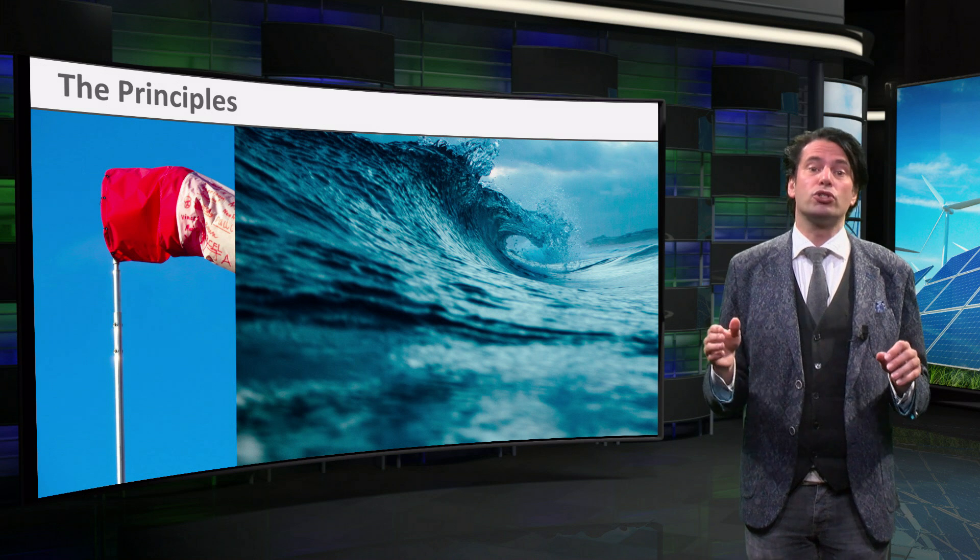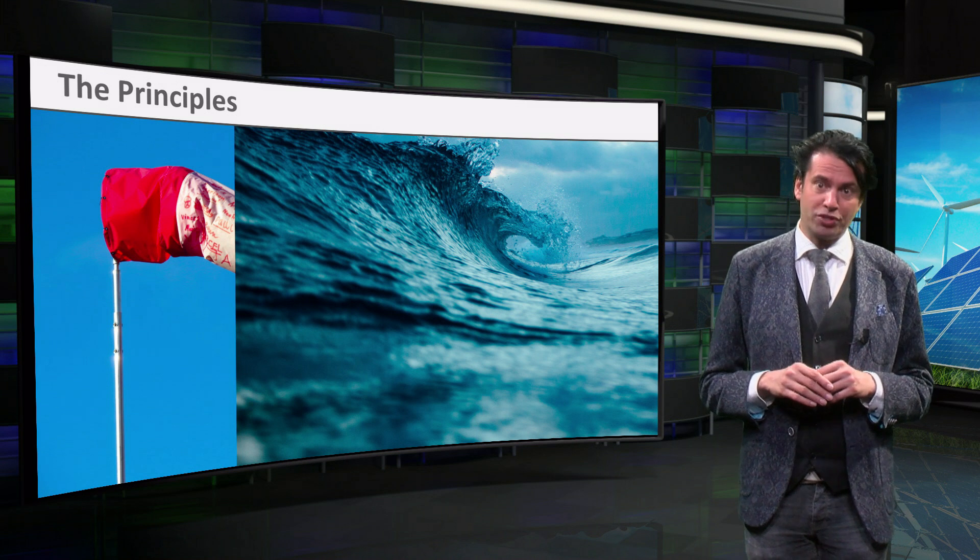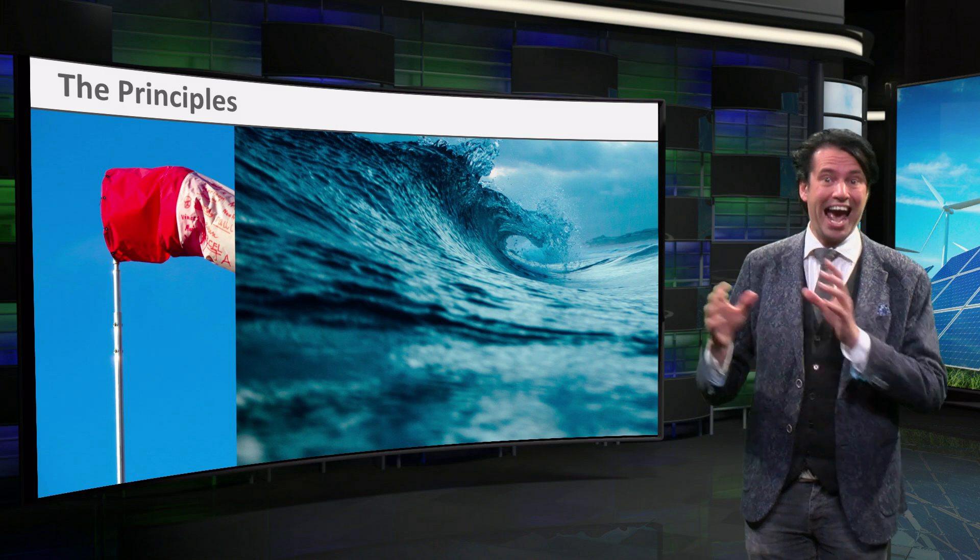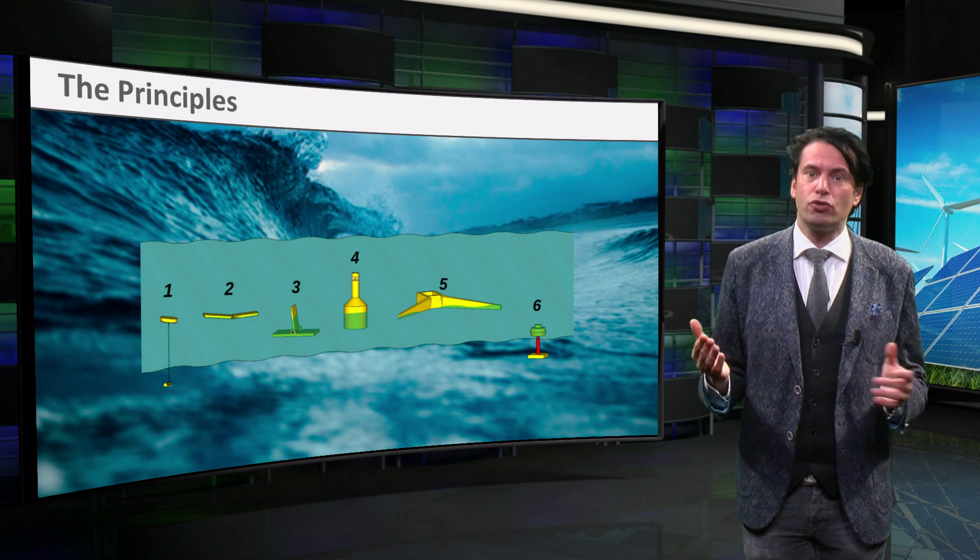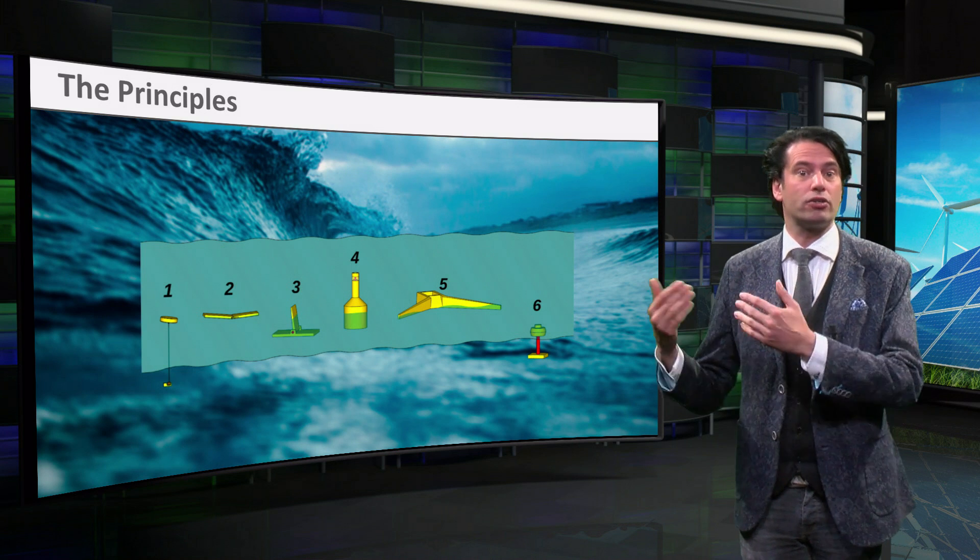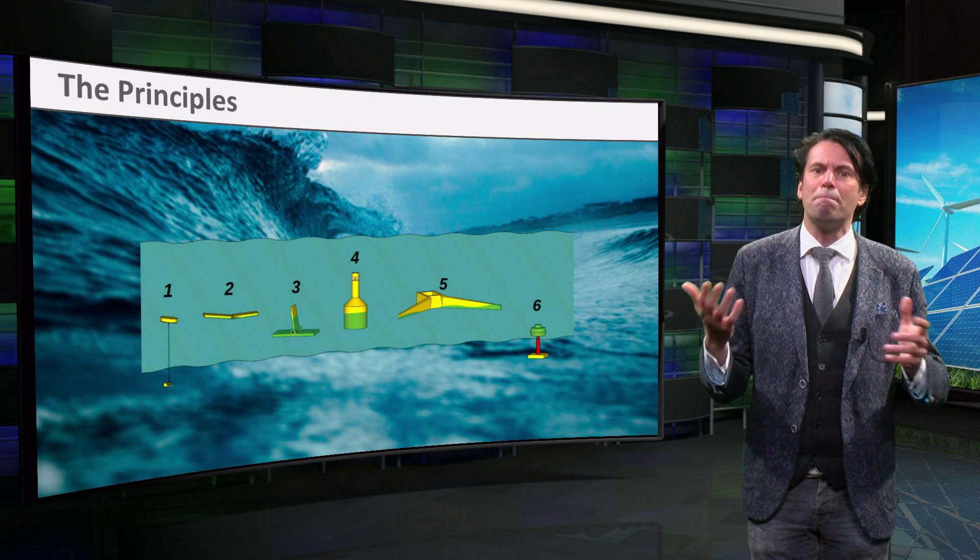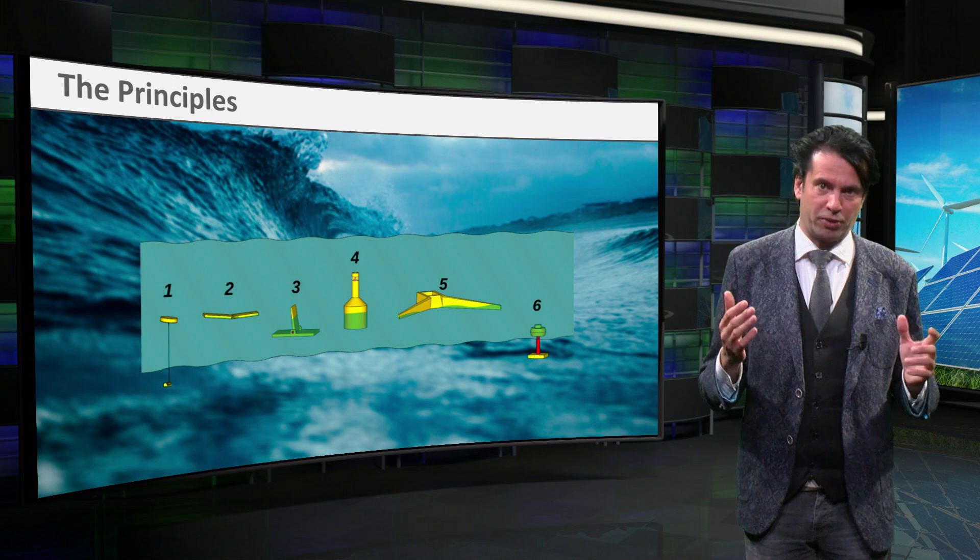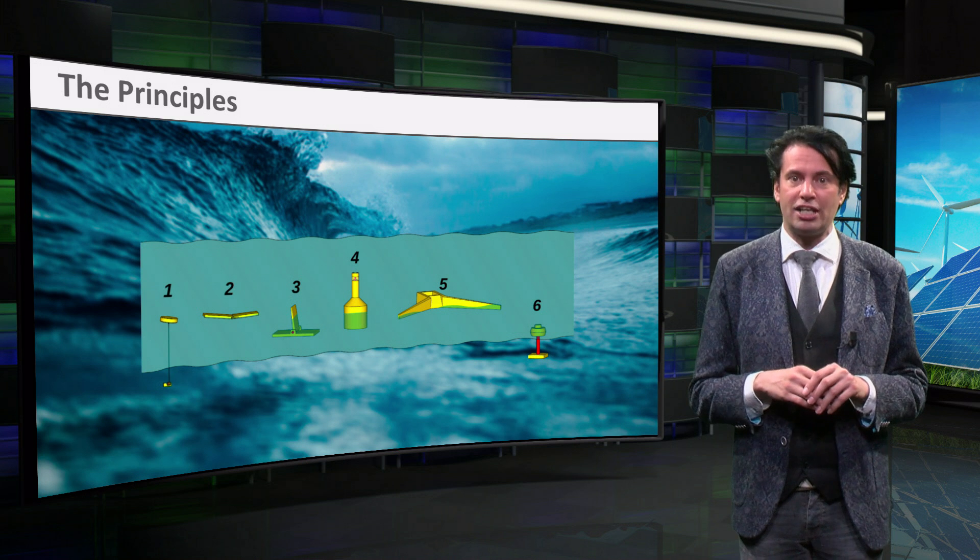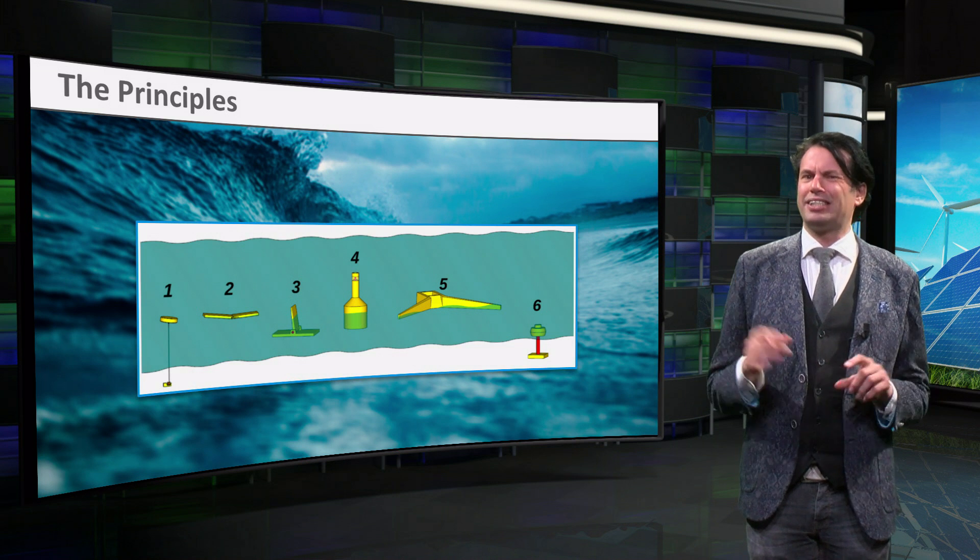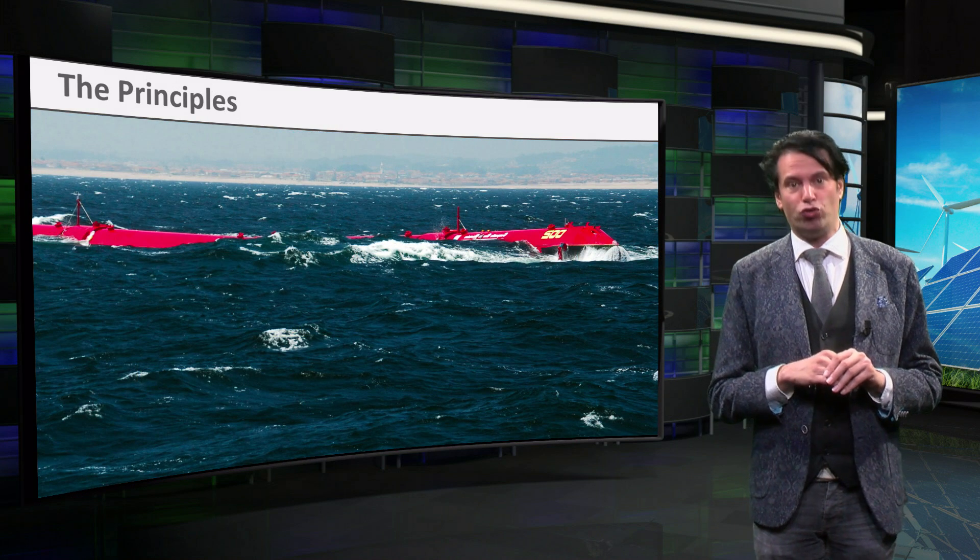The kinetic energy in the wind causes waves to form at the surface of the ocean water. Such a surface wave contains both potential and kinetic energy. Many different concepts have been designed to convert the energy from surface waves to electrical energy. This picture shows six of these concepts that all use the same basic energy conversion principle. We will focus on the second concept, which is known as a surface attenuator.